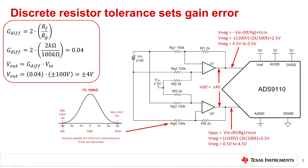In many cases, however, the gain is set by external discrete resistors. This example circuit shows a discrete implementation of a differential in, differential out amplifier.